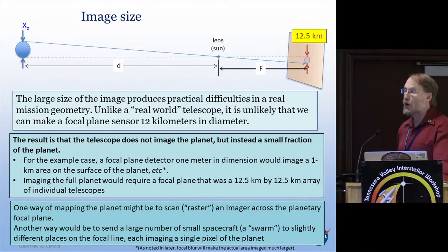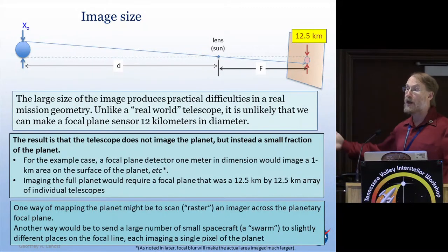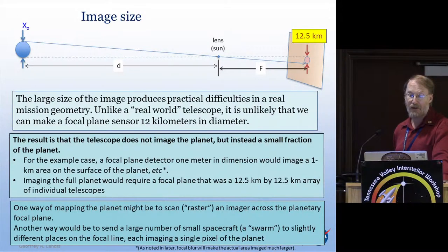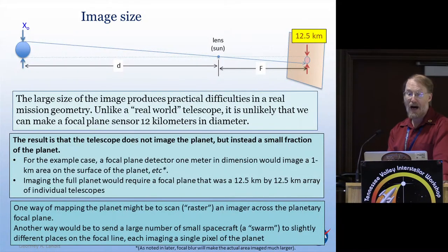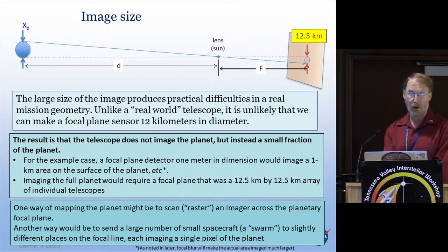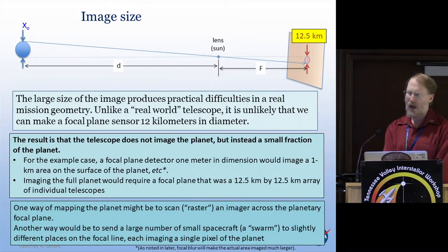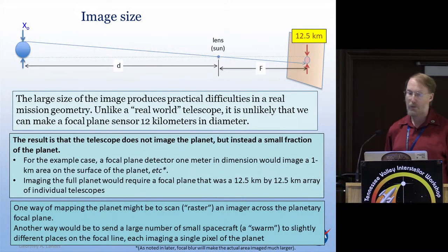So you're not imaging the whole planet — you image a small fraction of the planet, unless you have a focal plane that's many kilometers in diameter. An example case: a one meter telescope would image about a kilometer on the planet. That isn't what you image because of the focal blur. So imaging the whole planet would require a huge array. One thing is you could raster across the planetary disk.